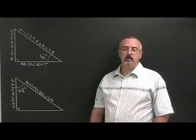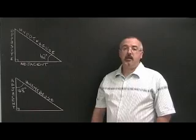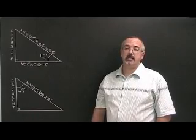The CAH formula involves an angle, the hypotenuse, and the adjacent side.